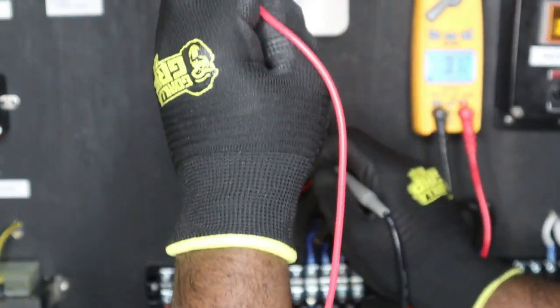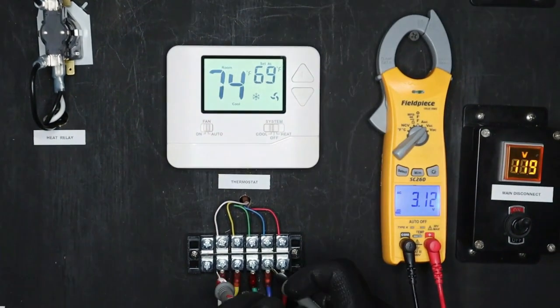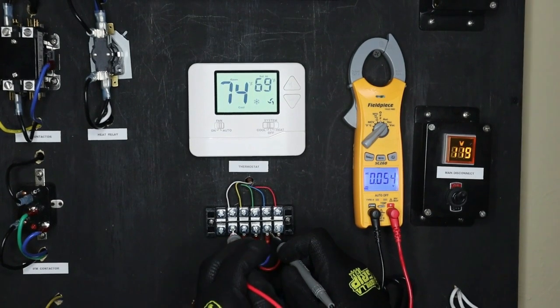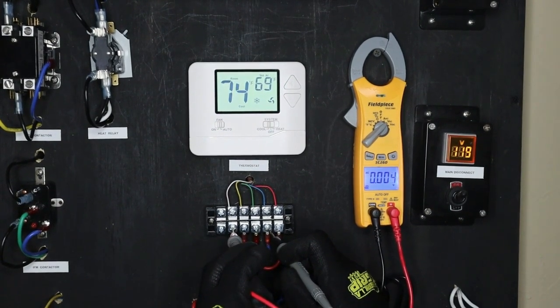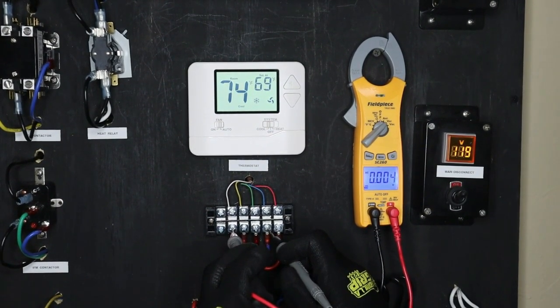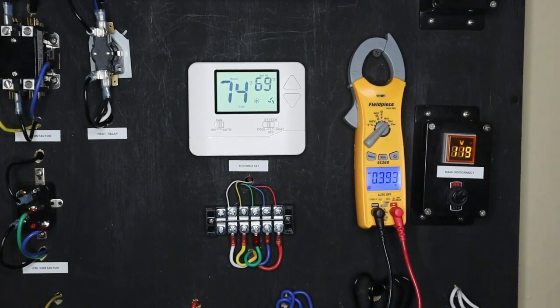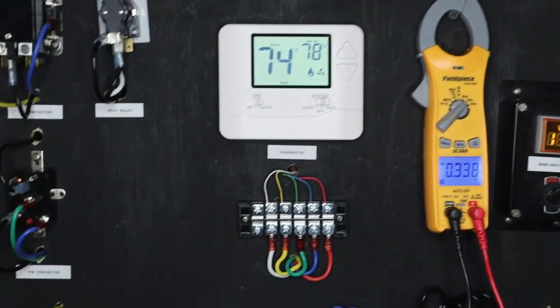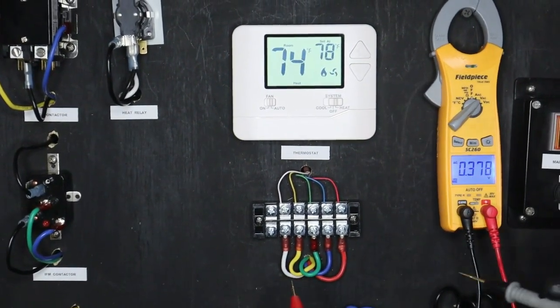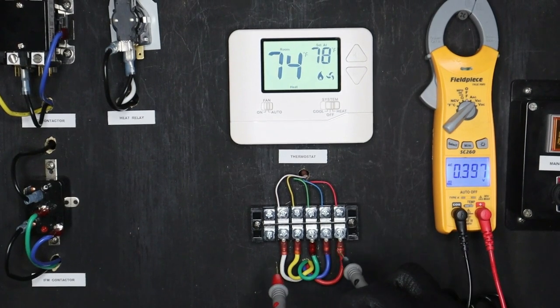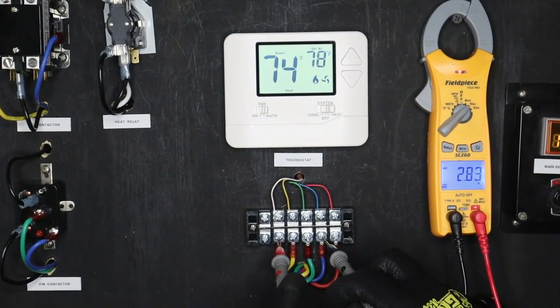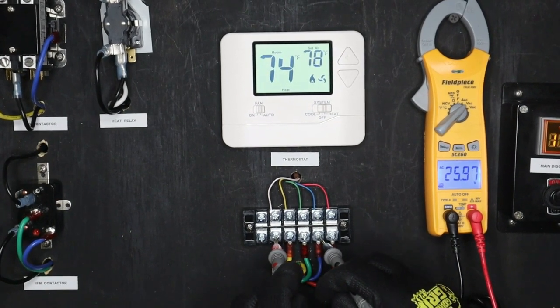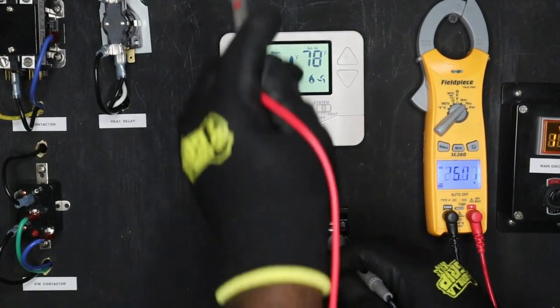Now the heat is off so if I should measure across the heat terminal of my thermostat I should have zero volts. As you can see I have 0.004 volts so that is not energized. Now if I should turn the heat on it has an on-delay, so currently if I measure it I have 24 volts, 25 volts, now it's energized.